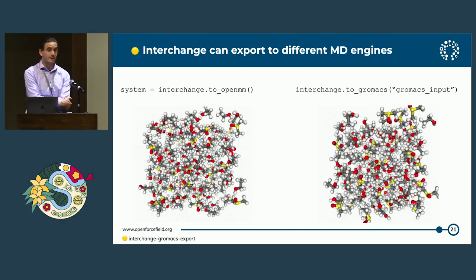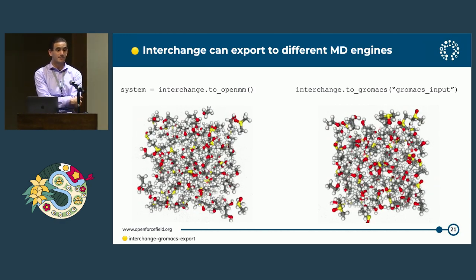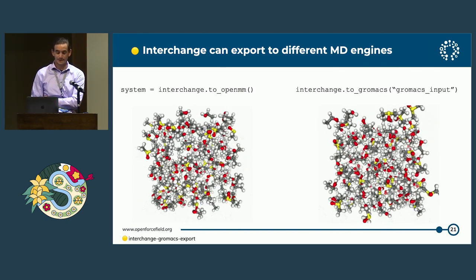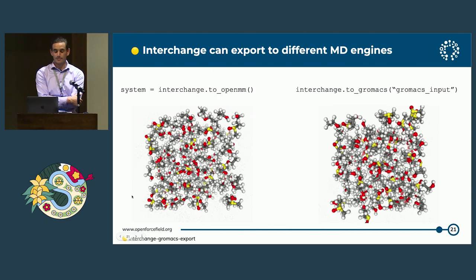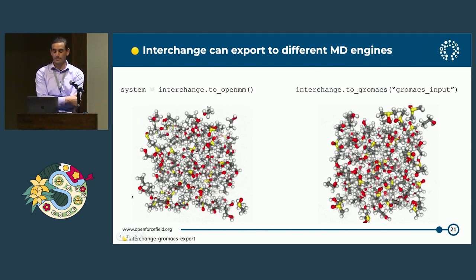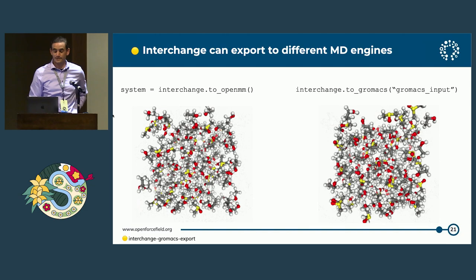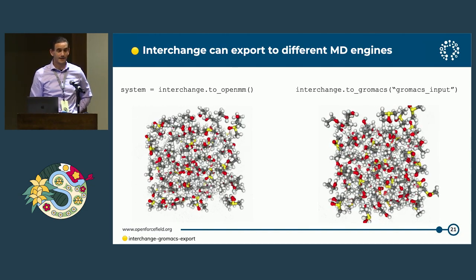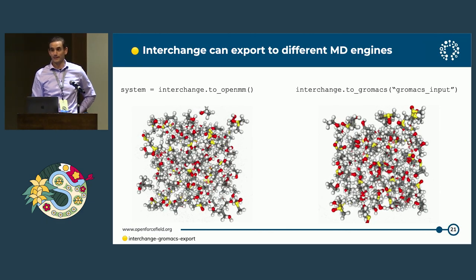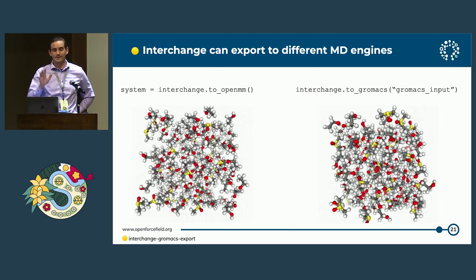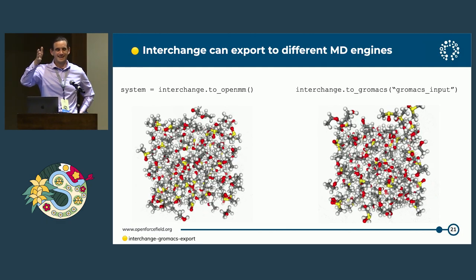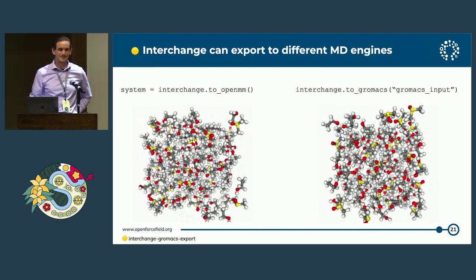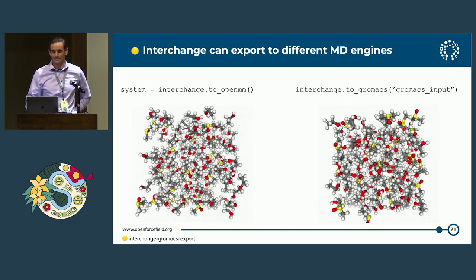Interchange is a simulation ecosystem-agnostic parameter container, and here's an example of that. We have a vignette for this — the Interchange Gromacs export vignette. I've taken a box of random organic compounds and simulated them. On the left, I use Interchange to export them to OpenMM and we get a good-looking simulation. On the right, I export them to Gromacs and we get a good-looking simulation. The reason they look different is because I'm bad with FFmpeg, but if I staggered their time steps evenly, you'd see they're about the same temperature and doing the same physics.